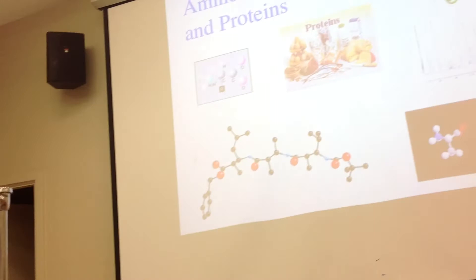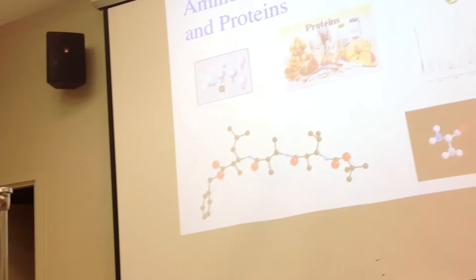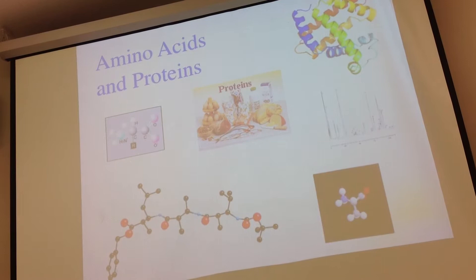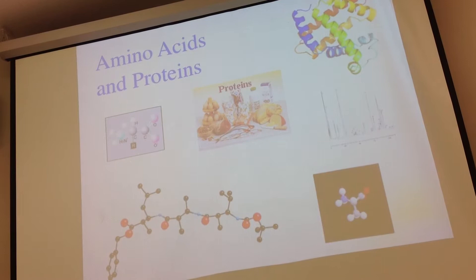Here we go with amino acids — just a little bit, some depictions of amino acids. Hopefully by the end of the lecture you'll understand what all those things are. Starting out, the very broad definition of an amino acid is a carboxylic acid that contains an amino group somewhere on the chain. I think you guys named them and just called them amino acids.